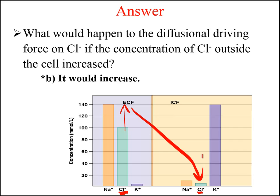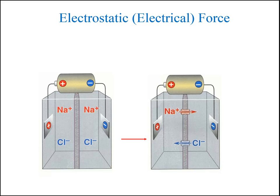Keep in mind that this force is only due to differences in the concentration of the ions across the cell membrane. The second force acting on ions is the electrostatic or electrical force, which is the driving force acting on ions due to differences in electrical charge across the membrane. Opposite charges attract — thus a cation like sodium will be attracted to a negative charge, and an anion like chloride will be attracted to a positive charge.